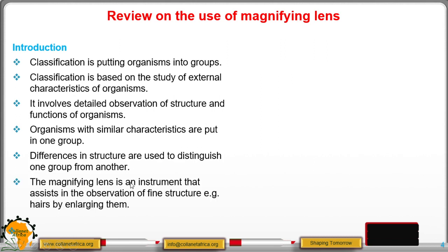The magnifying lens is an instrument that assists in the observation of fine structure. For example, the magnifying lens enlarges hairs so you are able to observe them in detail.